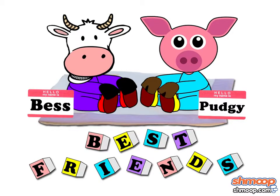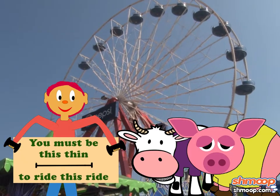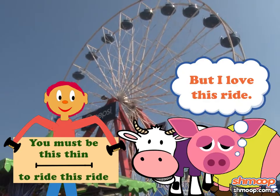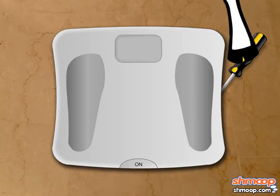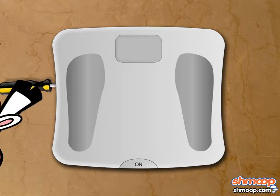Pudgy and Bess have been friends for a long time. But Bess has grown a wee bit tired of Pudgy's weight loss woes. So Bess has decided to fix Pudgy's scale to make it seem as if she is losing weight.